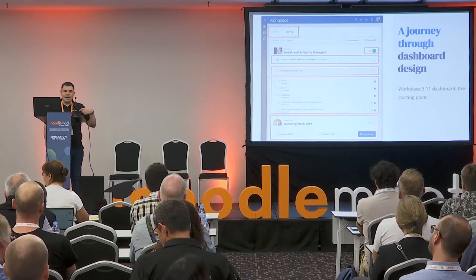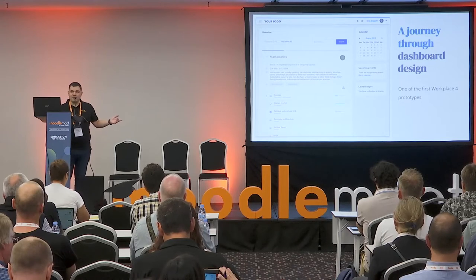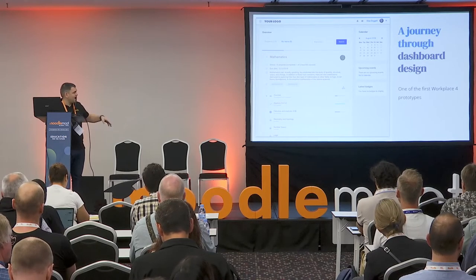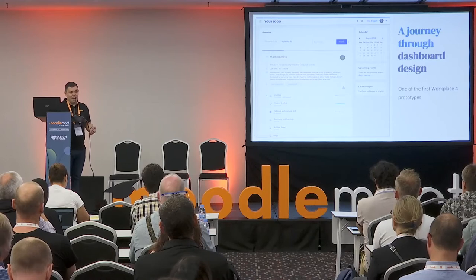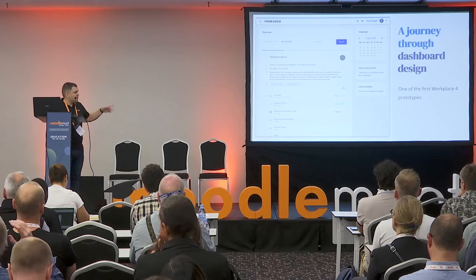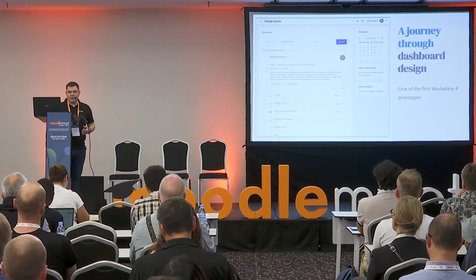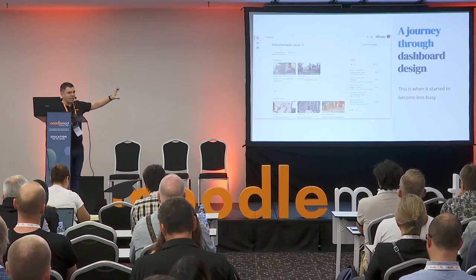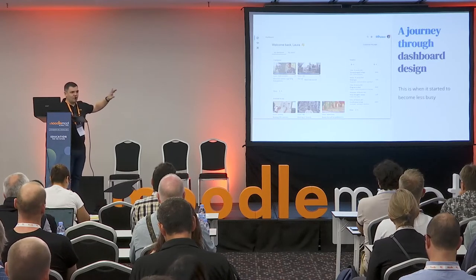With Workplace 4 we wanted to start from scratch, so we started iterating and testing with users. The first iteration was basically a Workplace 3.11 dashboard but nicer — cleaner with a more 4.0 design, but still the same thing: tabs, a lot of information. When we started testing, we found that for learners it was quite difficult to understand what a program is. They'd explore and finally get to the course, but it wasn't easy. So we started removing things and simplifying.